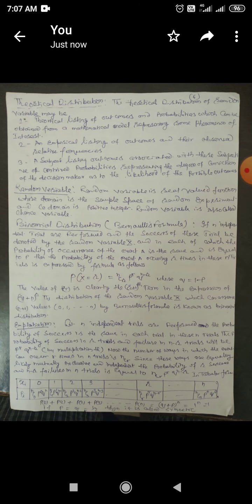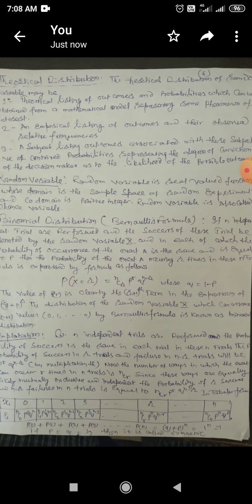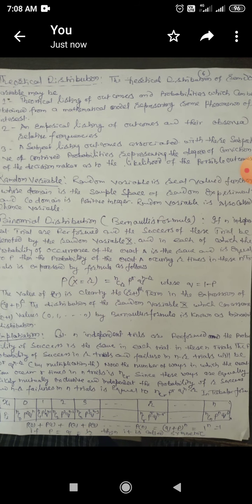The theoretical distribution of a random variable may be: theoretical listing of outcomes and probabilities which can be obtained from a mathematical model representing some phenomena of interest. Number two, an empirical listing of outcomes and their observed relative frequencies. A subjective listing of outcomes associated with their subjective probabilities representing the degree of conviction of the decision maker as to the likelihood of the possible outcome.